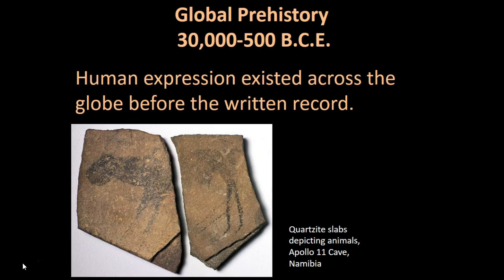Periods of time before the written record are often defined in terms of geological eras or major shifts in climate and the environment. The periods of global prehistory, known as lithic — L-I-T-H-I-C — or the Stone Age, are: Paleolithic, meaning Old Stone Age; Mesolithic, which means Middle Stone Age; and Neolithic, which is New Stone Age. Neo means new, paleo is old. We're going to focus primarily on the Paleolithic and Neolithic periods.